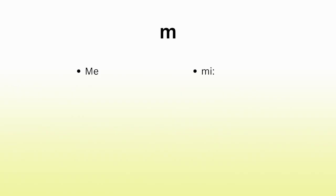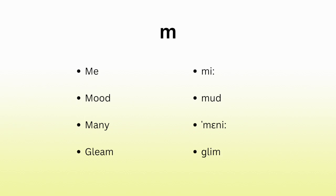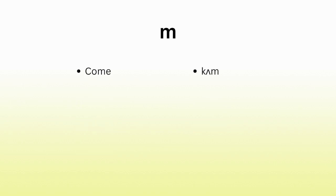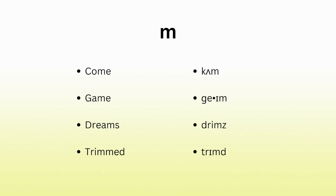So now let's say a few m words for practice. Repeat after me: me, me, me. Mood, mood, mood. Many, many, many. Gleam, gleam, gleam. Come, come, come. Game, game, game. Dreams, dreams, dreams. Trimmed, trimmed, trimmed.